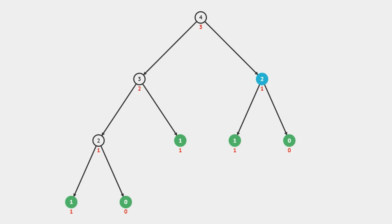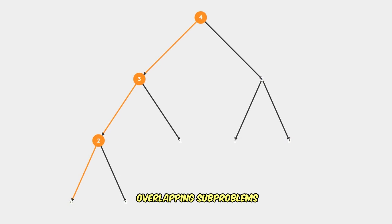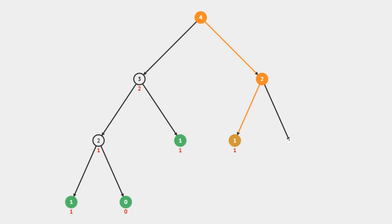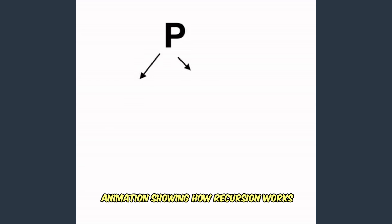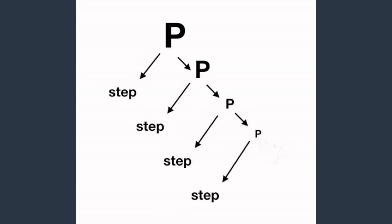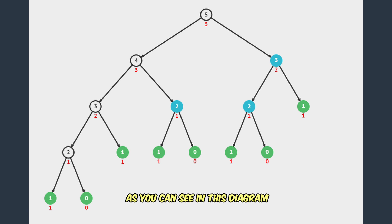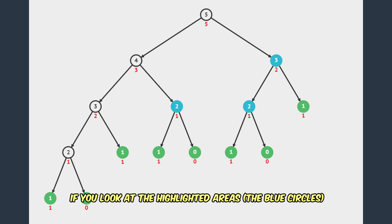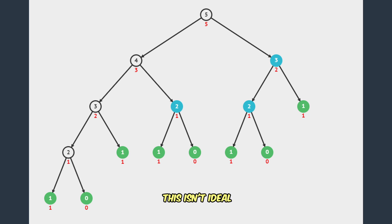As for the second characteristic, we have overlapping subproblems. As the name suggests, it's when problems overlap. The simplest example I can think of is to show you a visual of how recursion looks for the Fibonacci number problem. Recursion is basically when a function calls itself over and over again until it hits a base case. As you can see in this diagram, if you want to calculate the fifth Fibonacci number, here's all the work we have to perform. If you look at the highlighted areas, this is all the repeat work we're performing — this isn't ideal.